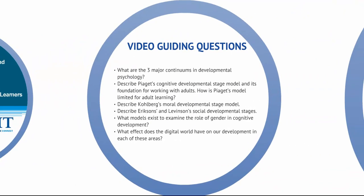Here are the guiding questions for this video. What are the three major continua in developmental psychology? Describe Piaget's cognitive developmental stage model and its foundation for working with adults, and how is Piaget's model limited for adult learning? Describe Kohlberg's moral developmental stage model and Erickson's and Levinson's social developmental stages. What models exist to examine the role of gender in cognitive development, and what effect does the digital world have on our development in each of these areas?